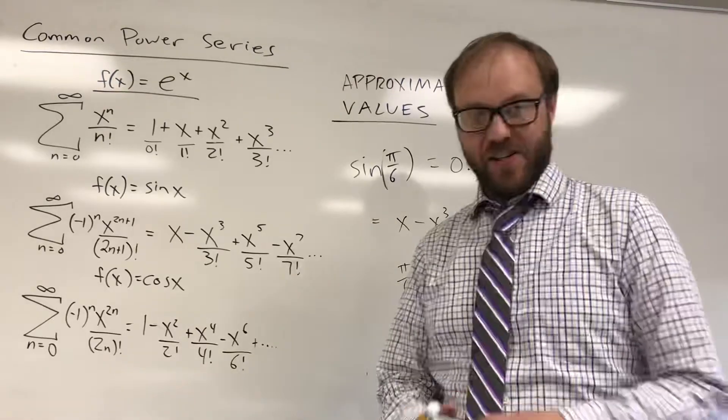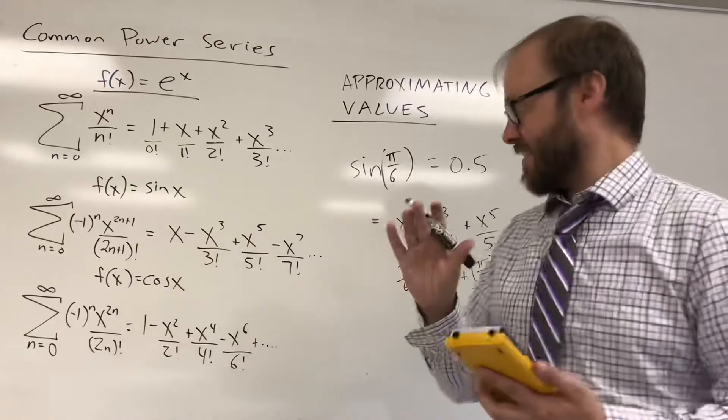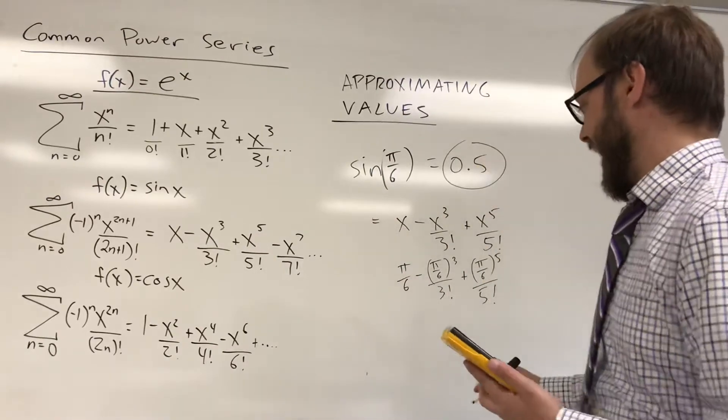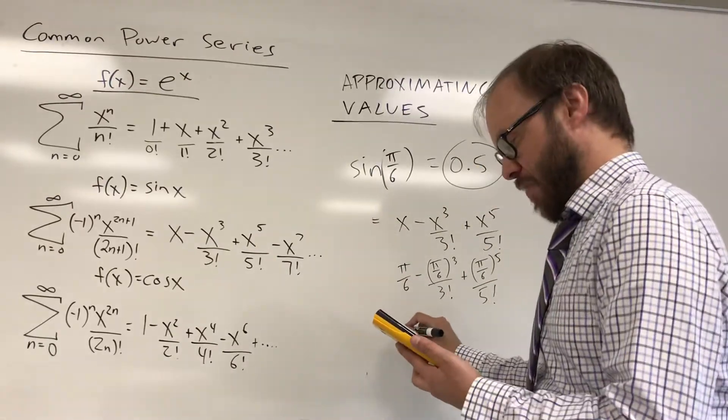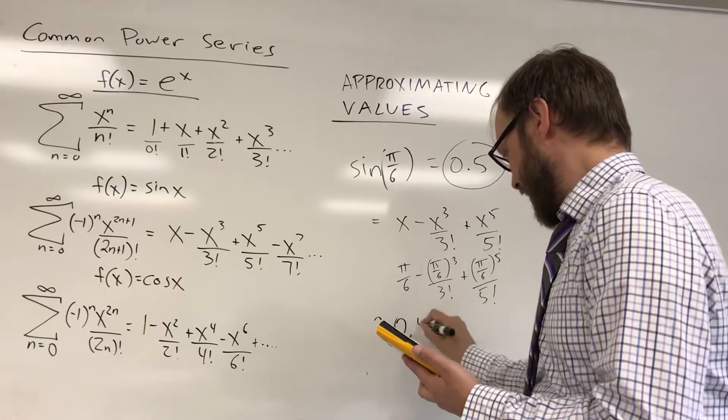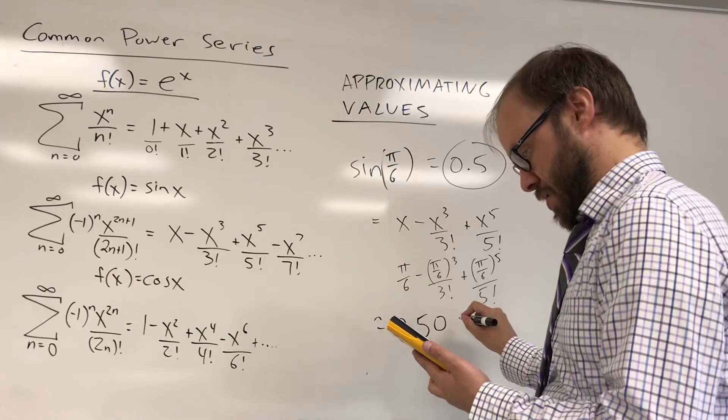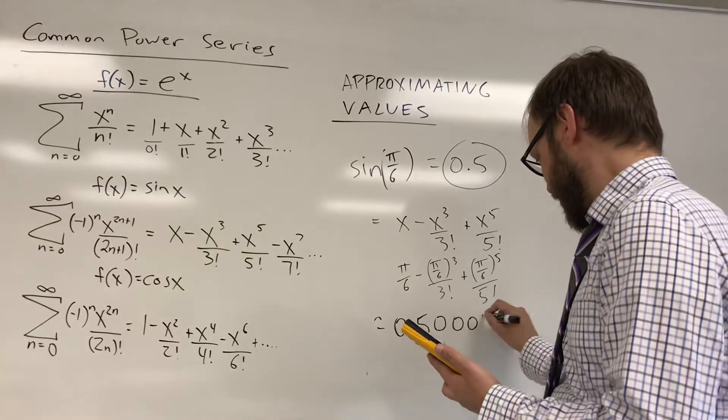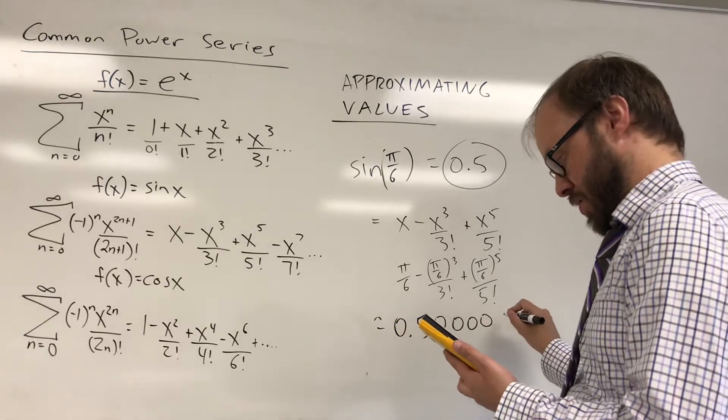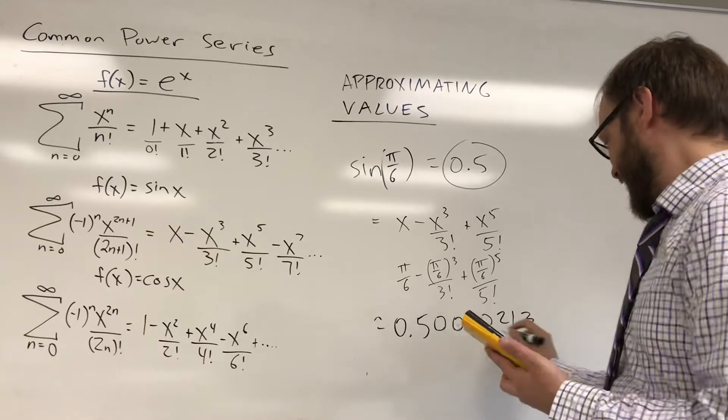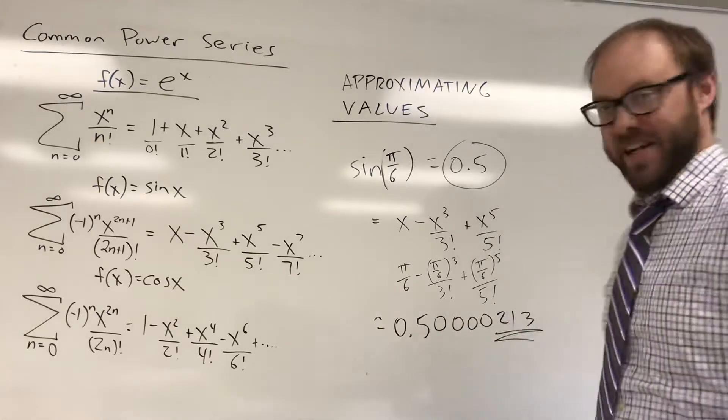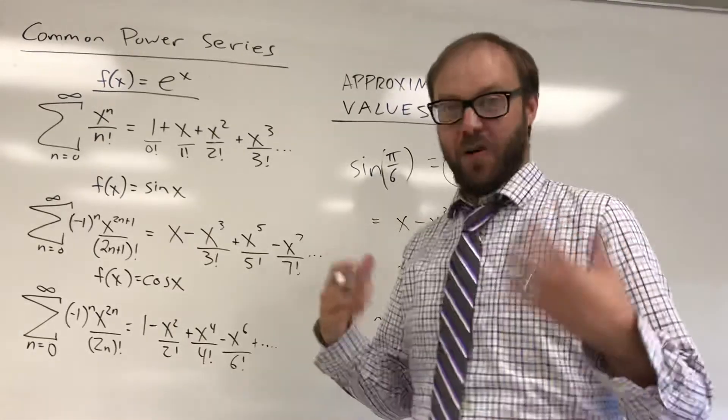And just to save a little bit of time, I've already run this on my calculator. Check this out. The answer is supposed to be one half. The answer is approximately 0.500000213. That's not very much error. That's unbelievably close.